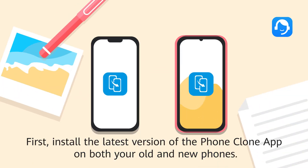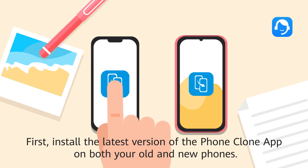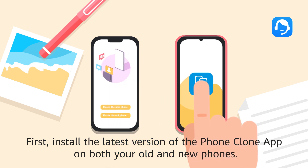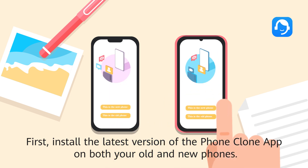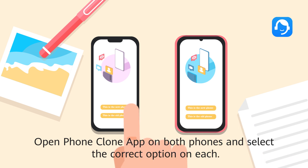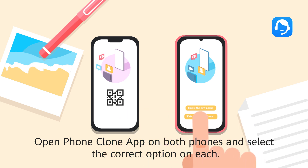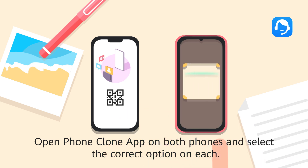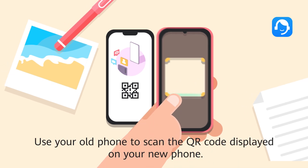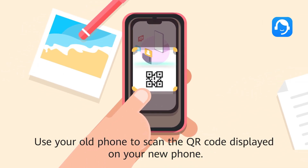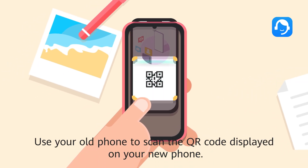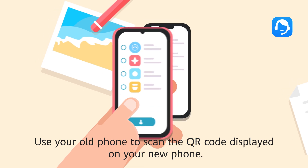First, install the latest version of the PhoneClone app on both your old and new phones. Open the PhoneClone app on both phones and select the correct option on each. Then use your old phone to scan the QR code displayed on your new phone.